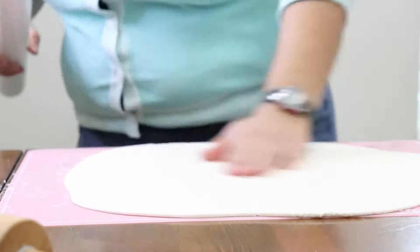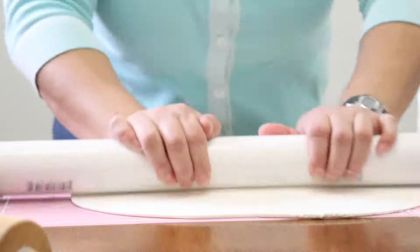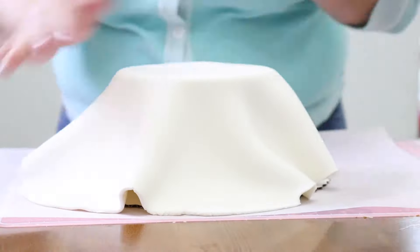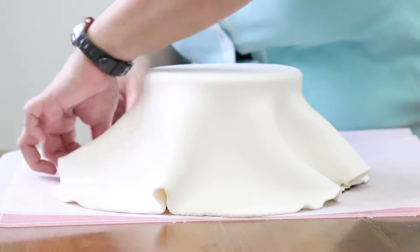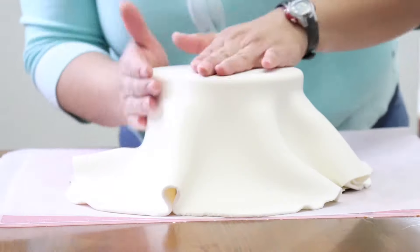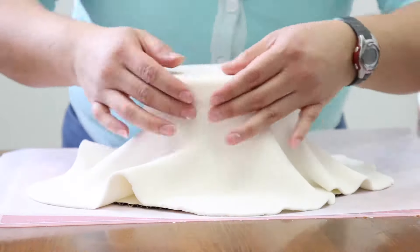Roll out the fondant to 1 1/8 of an inch in thickness. Just drape it over the cake and start attaching the fondant to the cake. Pull out the pleats and then bring them back with the palm of your hand.